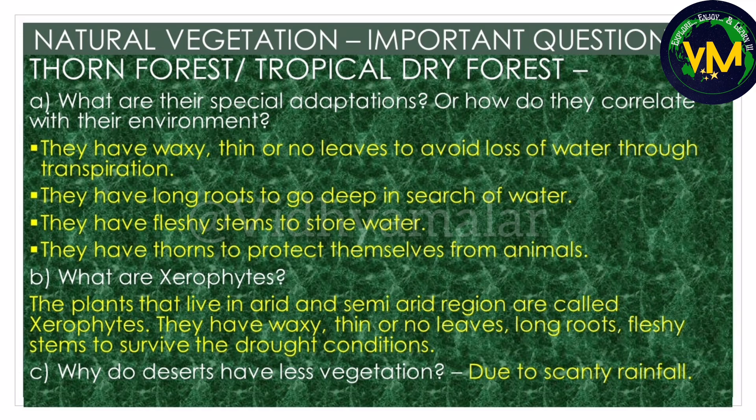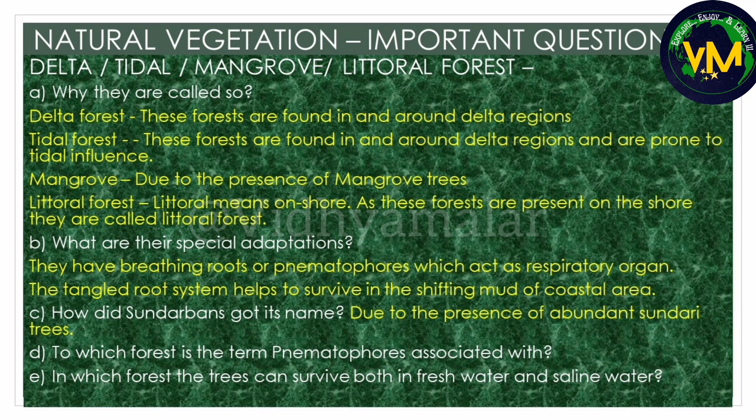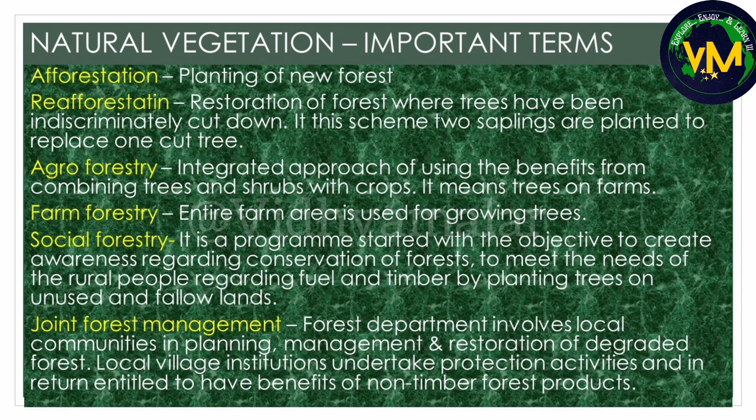For thorn forests or tropical dry forests, it is very important to know the special adaptations, also asked as how the trees correlate with their environment. The most important term here is xerophytes. Give reasons why deserts have less vegetation - it is because they have scanty rainfall. For delta, tidal, mangrove, or littoral forests, you should know why they are called by these names, their adaptations, and the important term nematophores. Also know why Sundarbans got its name - trees of these forests can survive in both freshwater and saline water. Finally, learn definitions for afforestation, re-afforestation, agroforestry, farm forestry, social forestry, and joint forest management.